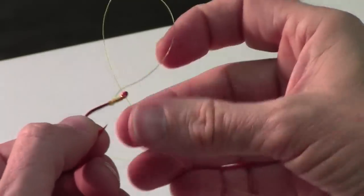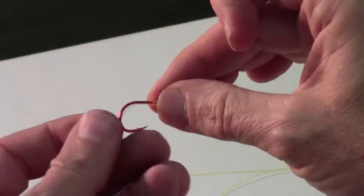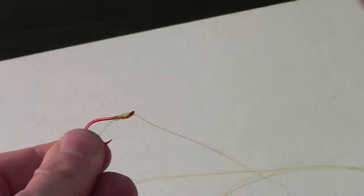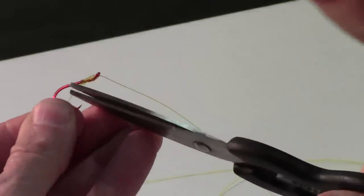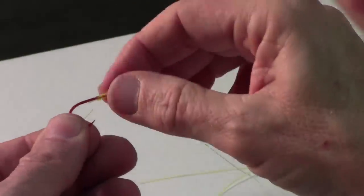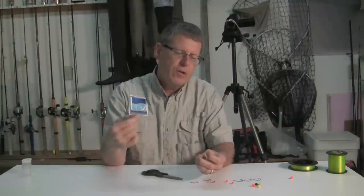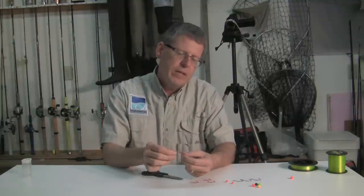So now you've got your beautiful little egg loop here all ready to go. I'm going to take this tail end here and I'm going to trim about a quarter of an inch and there you go.